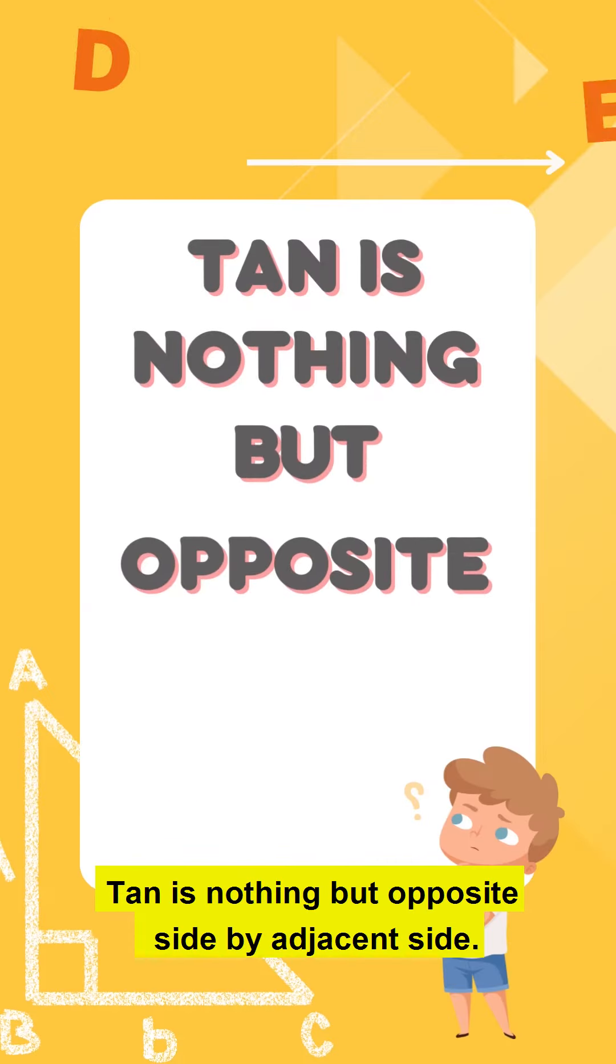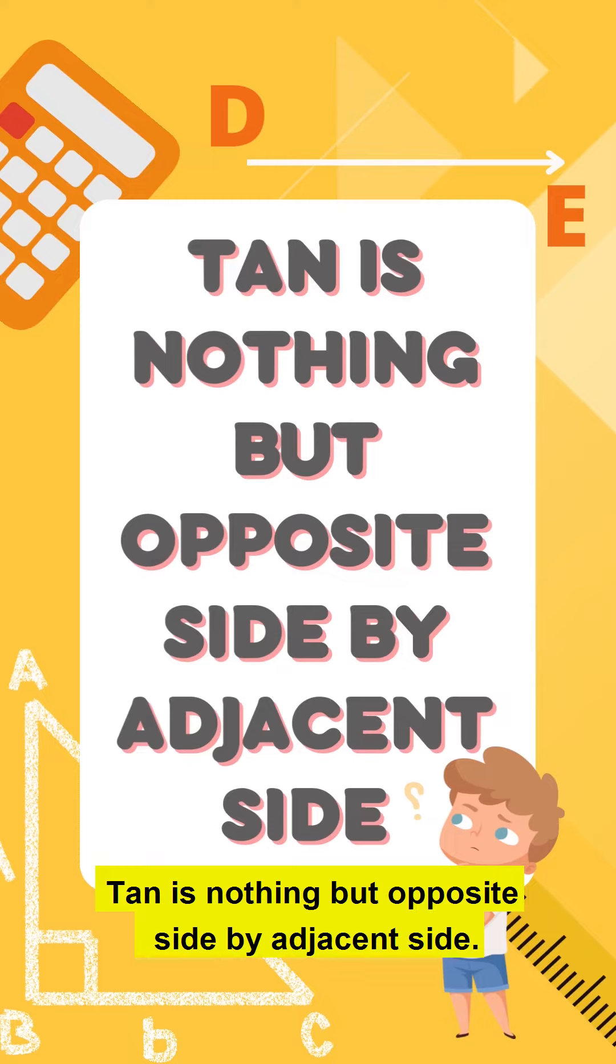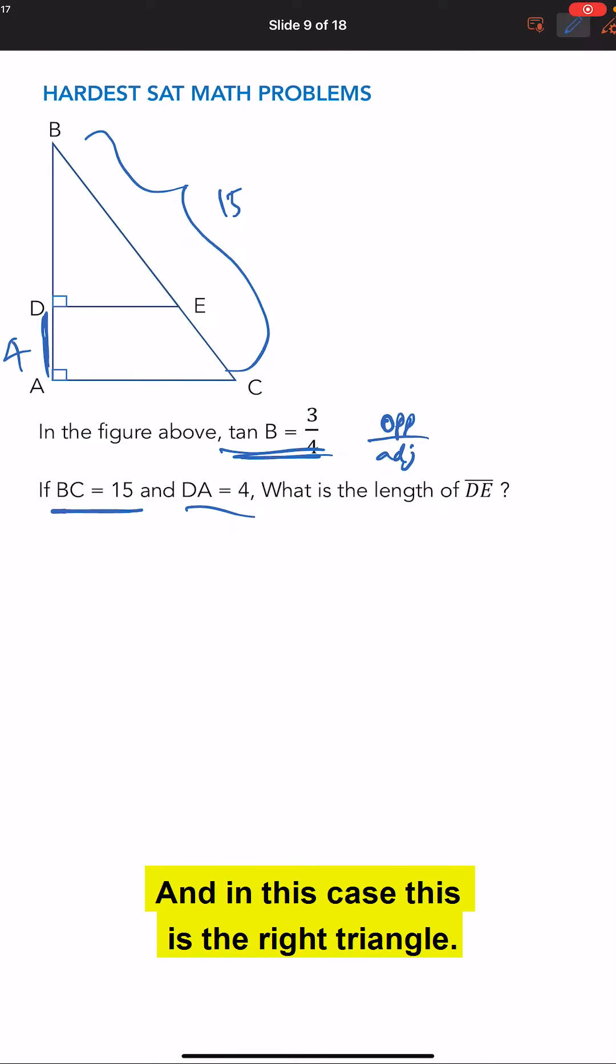Tan is nothing but opposite side by adjacent side. And in this case, this is a right triangle. So it's basically, I'm just going to make it 3x by 4x because we don't know what it is.